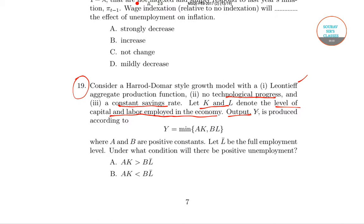Now K and L denote the level of capital and labor employed in the economy. Output Y is produced according to Y equals minimum of AK comma BL, where A and B are positive constants.